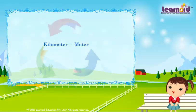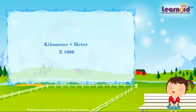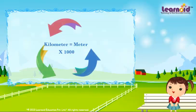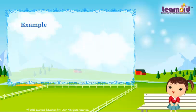To convert kilometers to meters, multiply by 1000. For example, 6 kilometers is equal to 6 into 1000, which is equal to 6000 meters.